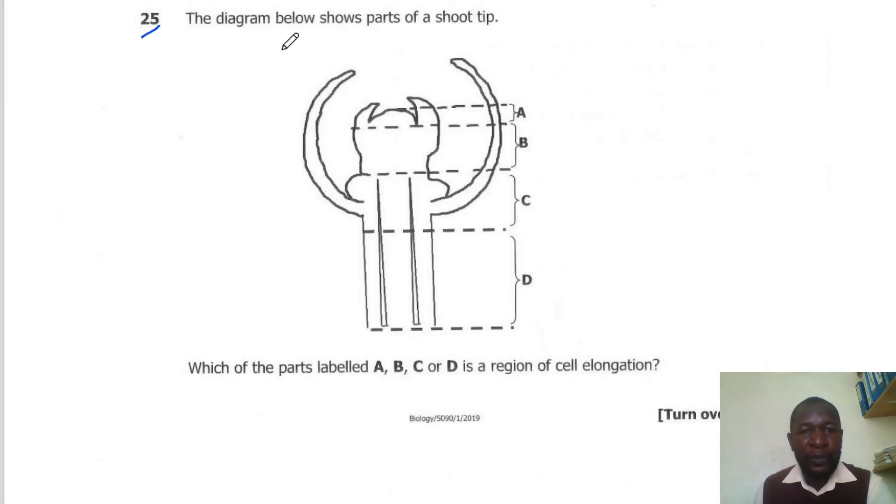Question 25. The diagram below shows part of a shoot tip. Which of the following parts labeled A, B, C, or D is the region of cell elongation? The region of cell elongation is Part B.